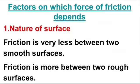Now, factors on which the force of friction depends. The first factor is the nature of the surface. Friction is very less between two smooth surfaces, and if the surfaces are rough, then friction is more. Friction is more between two rough surfaces. Activities proving this were done in the previous lecture.